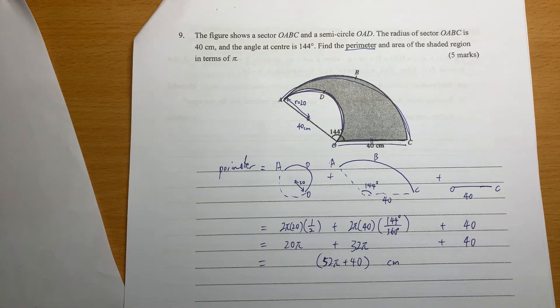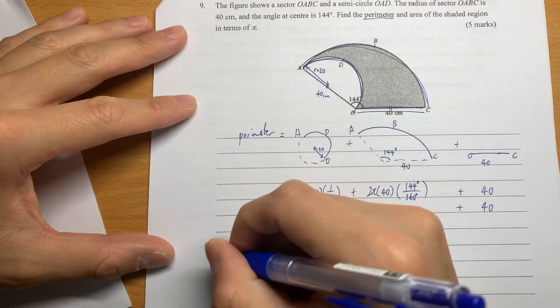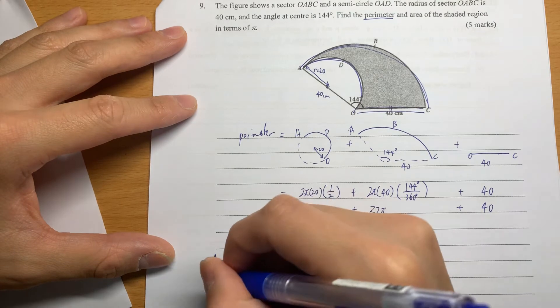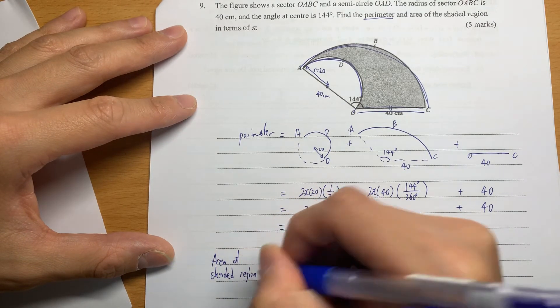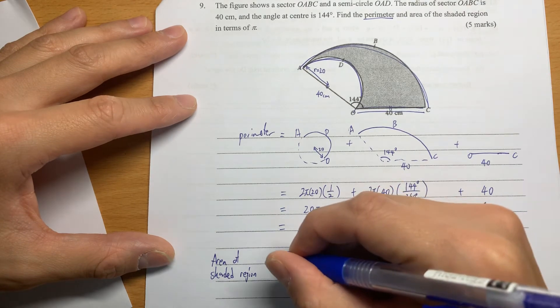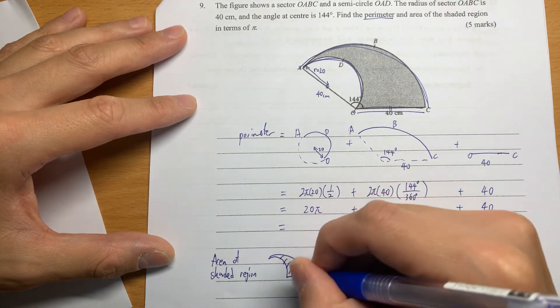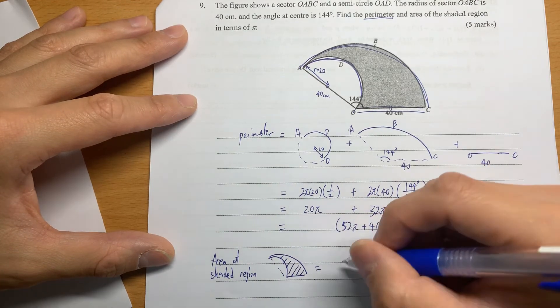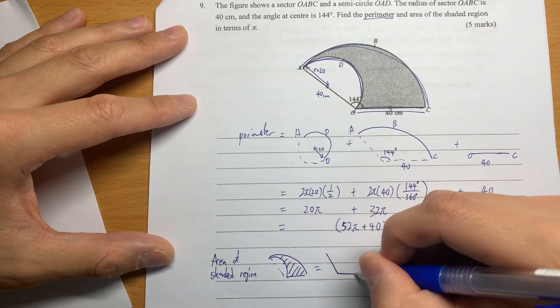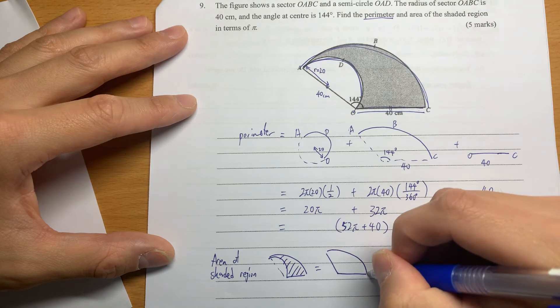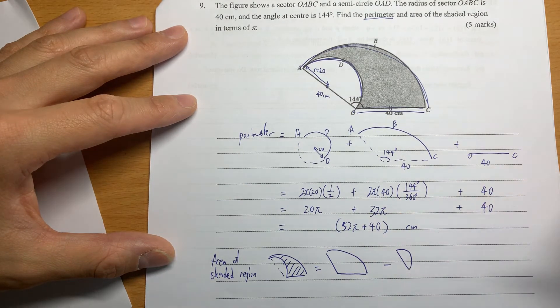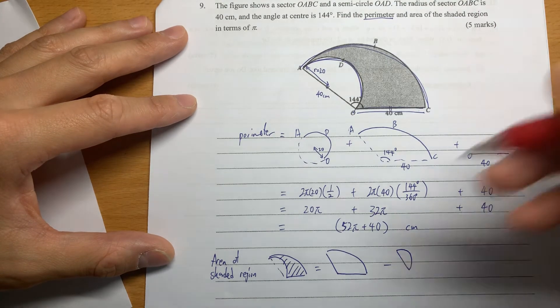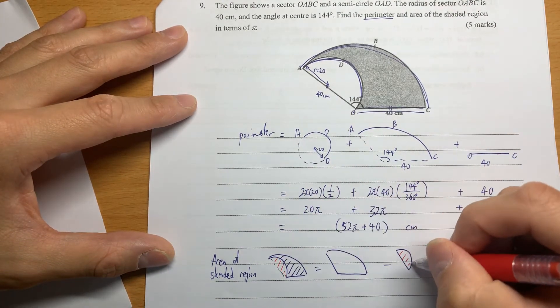To get the area, we use similar logic. The area of the shaded region - I'll draw the shape. It's like this. We are talking about this shape. That means we have a larger piece, and then I cut out this semicircle part. I cut out this part.